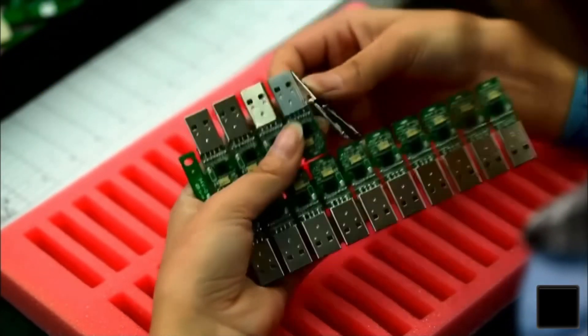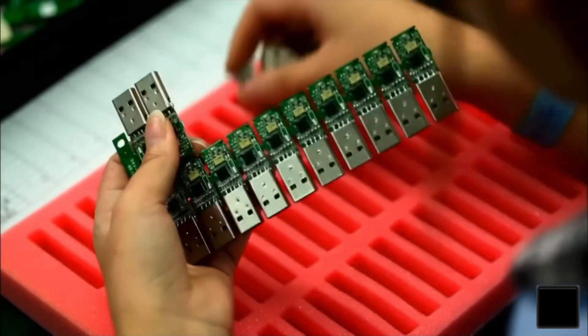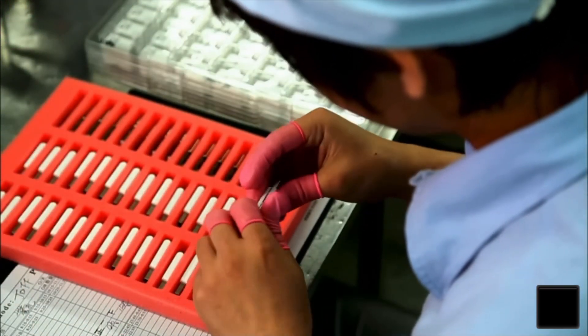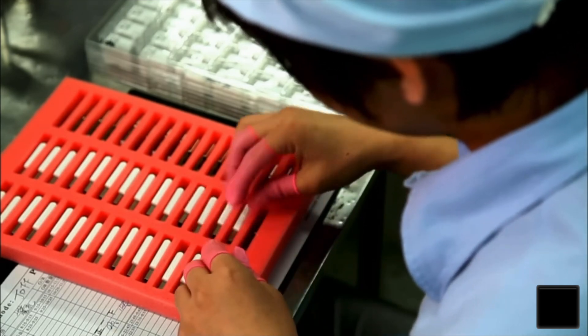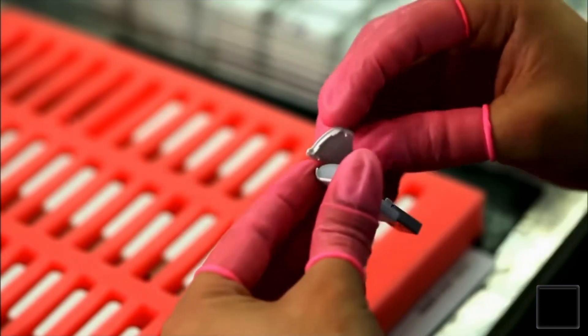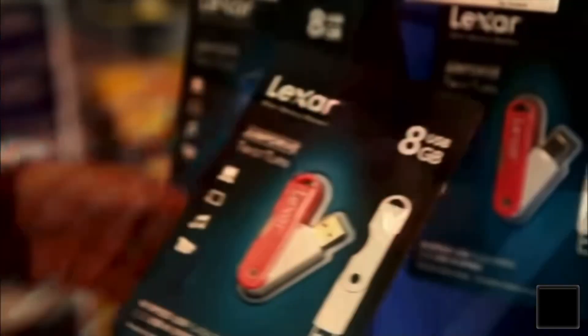The flash drives are now ready to go into individual housings. This model has a two-part plastic housing, which pivots in and out of a plastic case, that can conveniently be attached to a keychain or lanyard for easy portability.